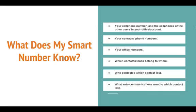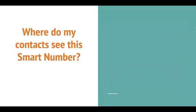Your smart number also knows which auto communications went to which contact last. So any of your smart campaigns that have gone out — it knows which auto communications were sent to that last contact.